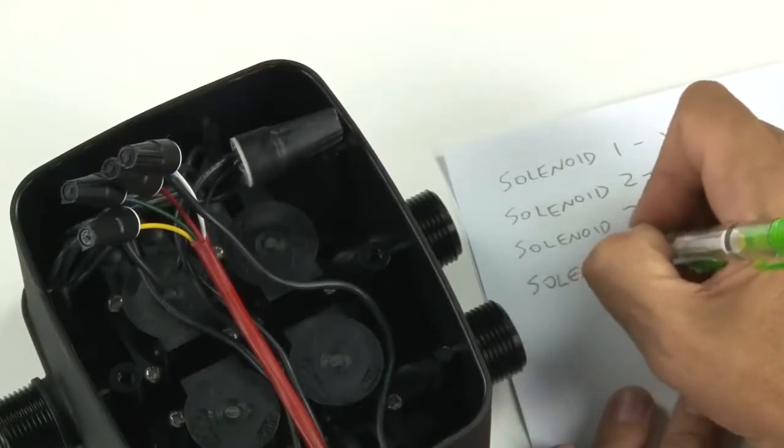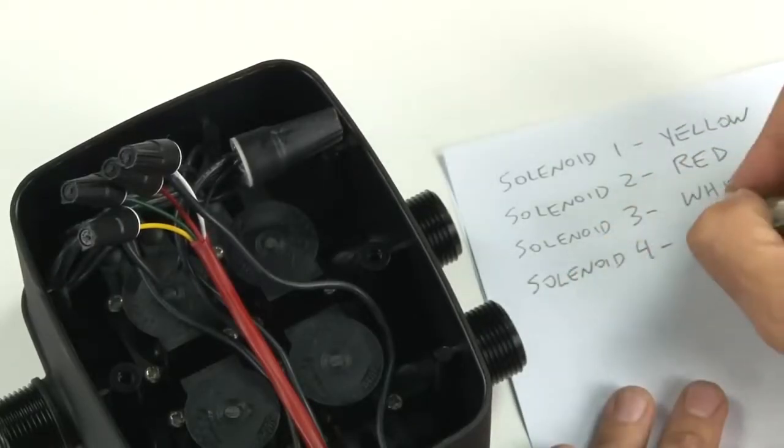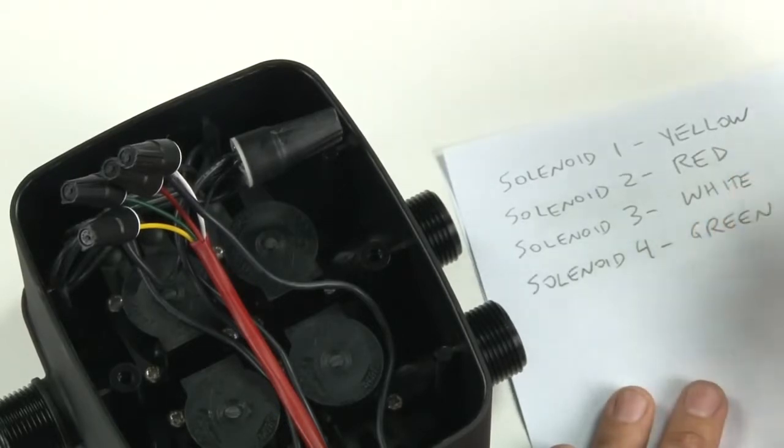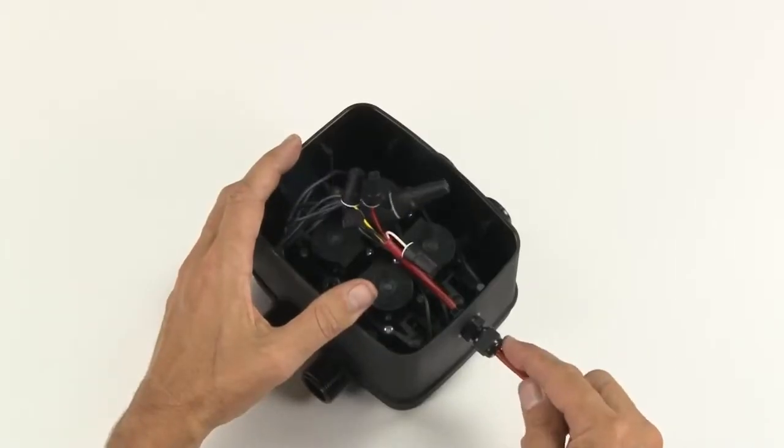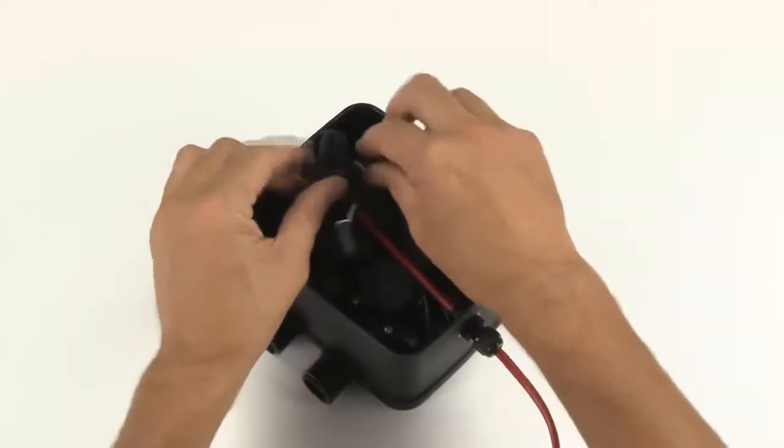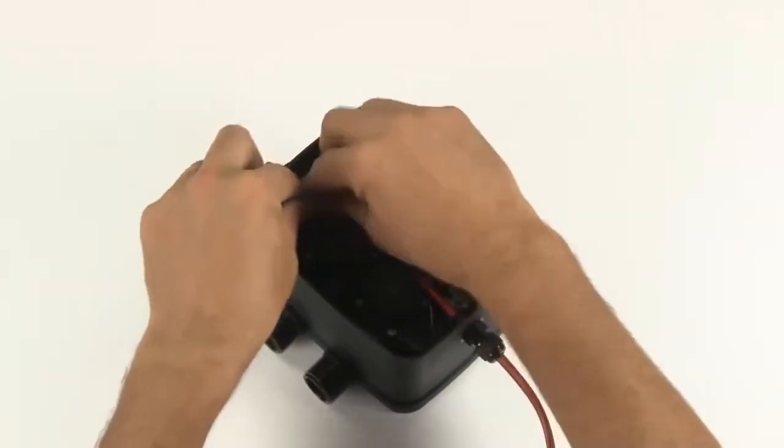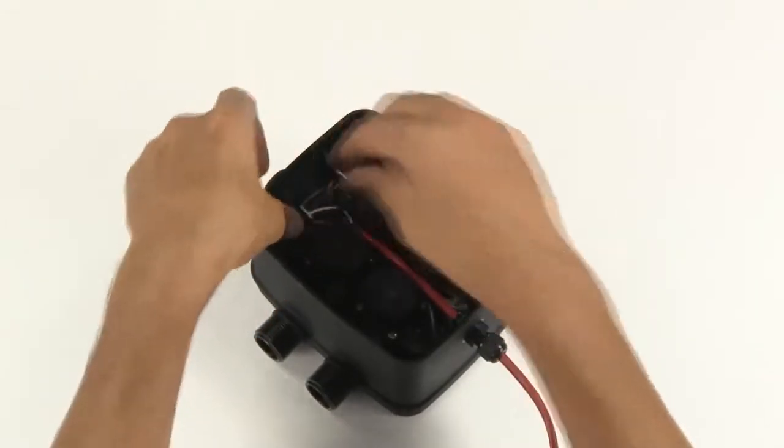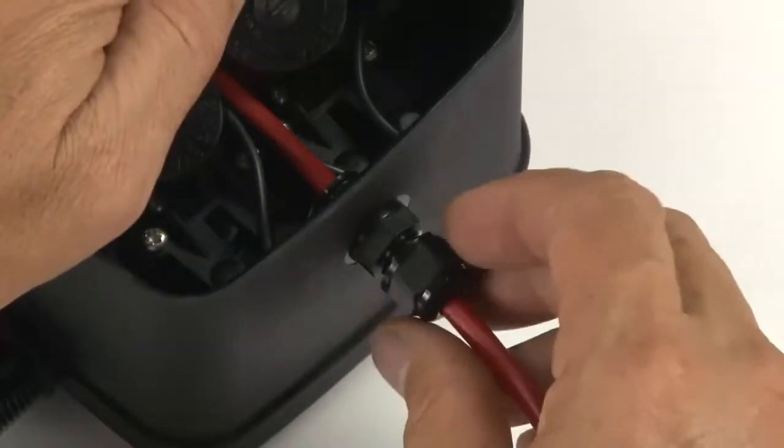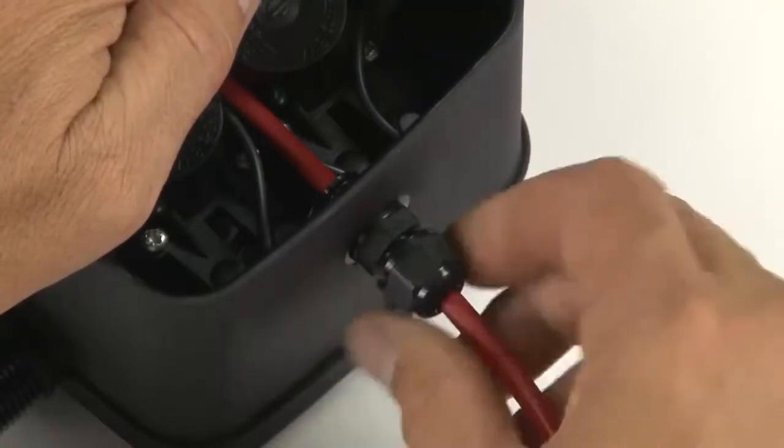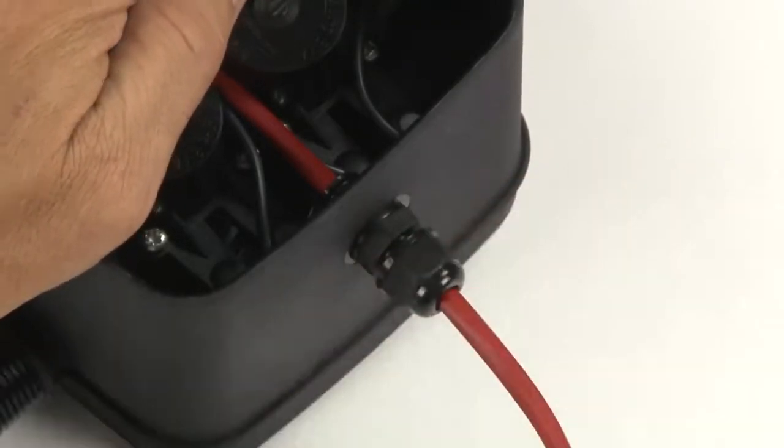Write down the solenoid numbers 1 to 4 and note which colored wire you connected for later reference. Adjust the cable length inside the box and neatly arrange the connectors. Allow a little bit of surplus wire in case you want to reconnect something at a later date. Tighten the sealing nut on the outside of the box so it clamps down on the cable to provide a waterproof seal.